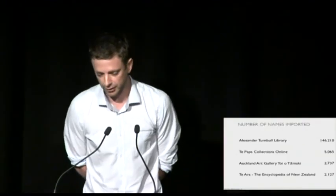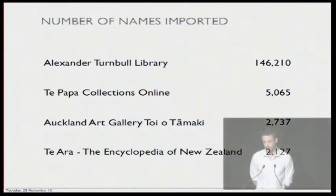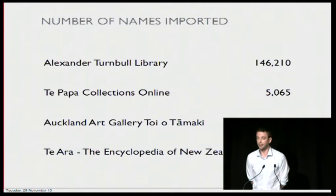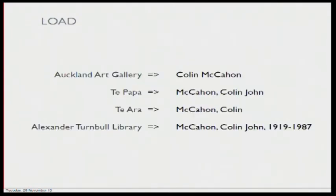So here's the experiment. I approached staff from four quite different institutions and asked if I could have a crack at linking their personal authority metadata together. I got 146,000 names from the Alexander Turnbull Library — both people and corporate entities. Over 5,000 people from Te Papa, 2,700 artists from the Auckland Art Gallery, and 2,100 person entities from Tiara.